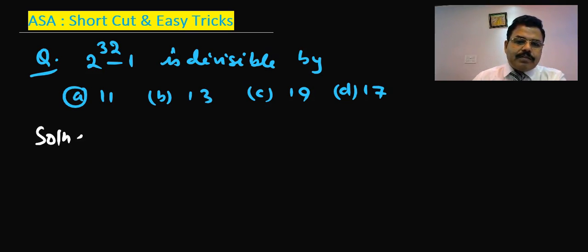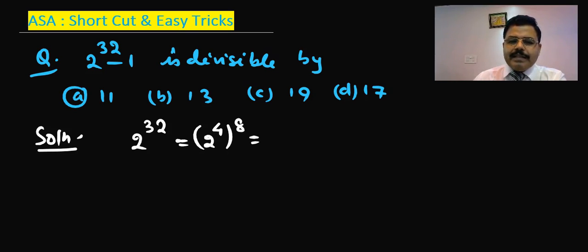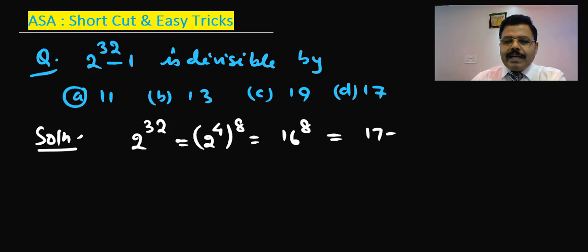The solution is: 2 to the power 32 can be written as 2 to the power 4, to the power 8, which equals 16 to the power 8. That can be written as 17 minus 1 to the power 8.